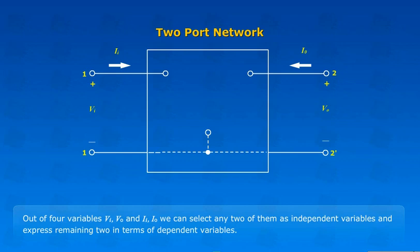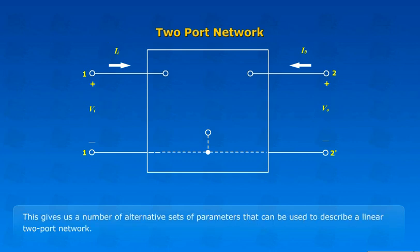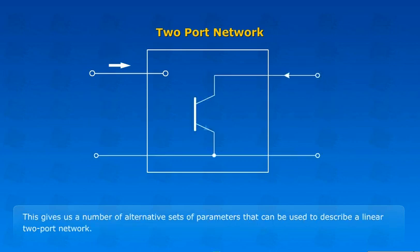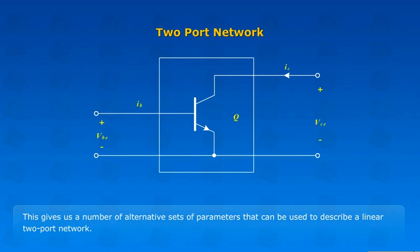Out of four variables VI, VO, II, and IO, we can select any two of them as independent variables and express the remaining two in terms of dependent variables. This gives us a number of alternative sets of parameters that can be used to describe a linear two-port network.